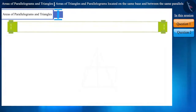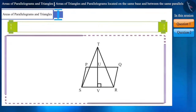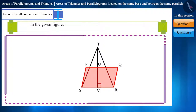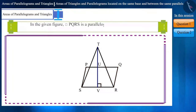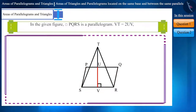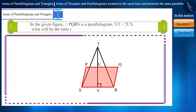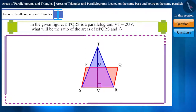Let's look at the first question. In the given figure, PQRS is a parallelogram. If Vt is equal to 2UV, then what will be the ratio of the areas of quadrilateral PQRS and triangle STR?